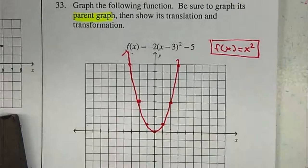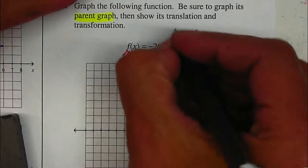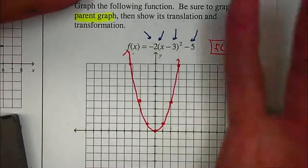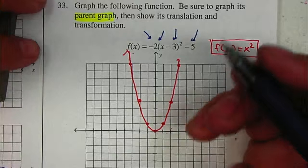Now, I need to find out how many components we have. We have the -5, the -3, the 2, and the negative. So there's going to be four different translation transformations, four different changes to the graph.